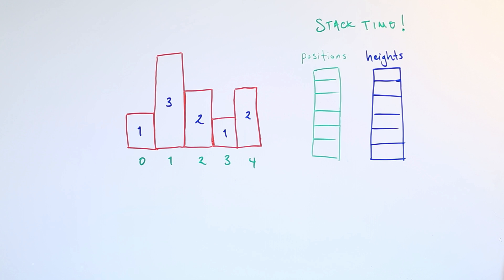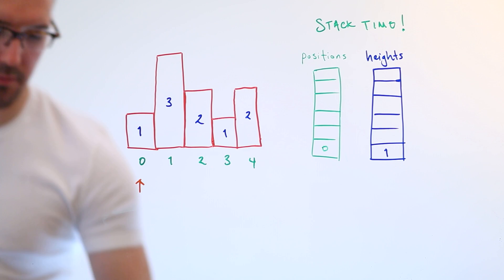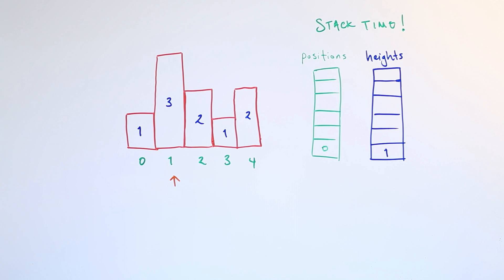The algorithm works like this: you start from the left side and check if you're at the biggest height you've seen so far. If you are, you push it into a stack. We actually need two stacks — one to store the height and one to store the position — and we'll keep them in sync. So as soon as we hit the first value of height one, we know we might have a rectangle of height one but we don't know how wide, so we push that and move on. When we reach height three, we might have a new rectangle starting, and we push three in as well.